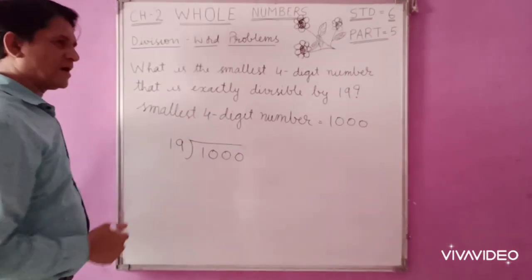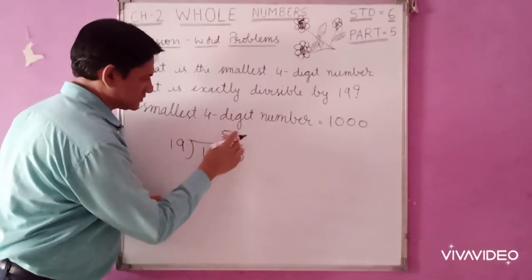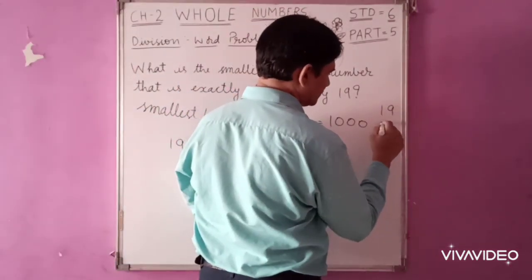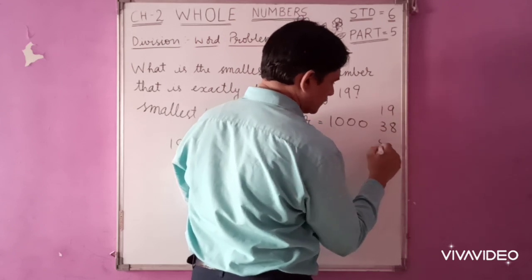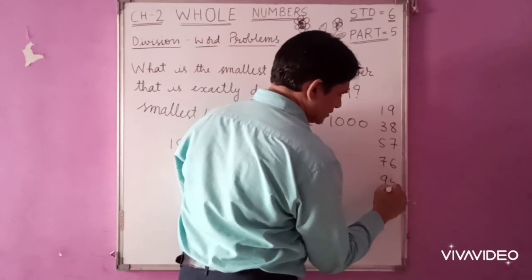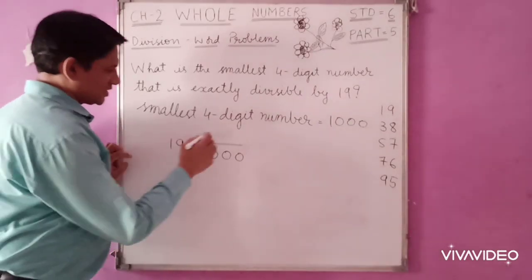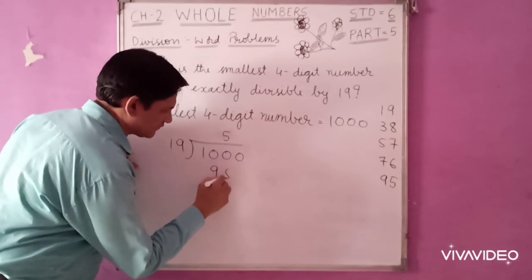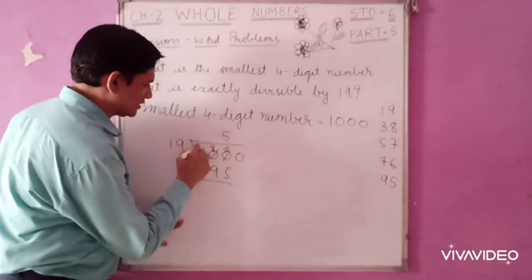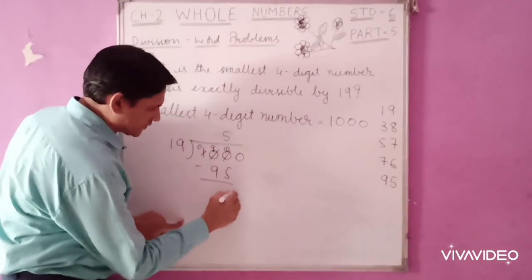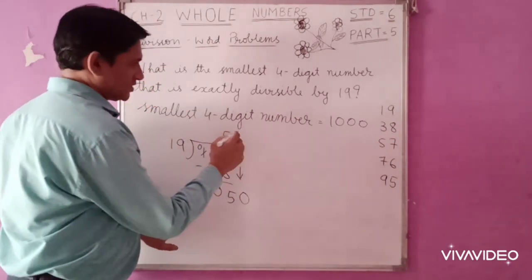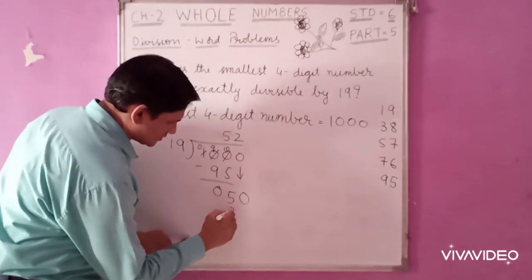So first divide 1000 by 19. Suppose you don't know the table, so we will write the table: 19, 38, 57, 76, 95. Subtract, you get 10, then carry down 0. 10 minus 5 is 5, carry down 0. So we have 19 times 2 is 38.